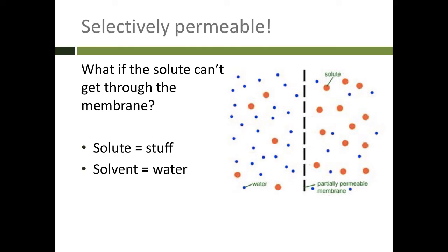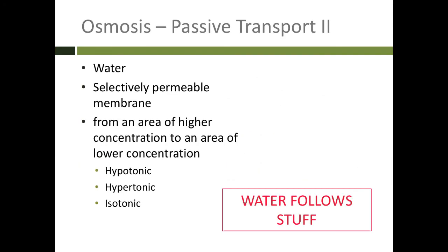Which way will the water move? The water is going to move towards where the stuff is — from the left to the right in this case — and it will dilute the concentration of solute over there. This movement of water through a semipermeable membrane is known as osmosis, and it is a type of passive transport relating only to the movement of water. The way to remember which way the water goes: water always goes towards where all the stuff is.